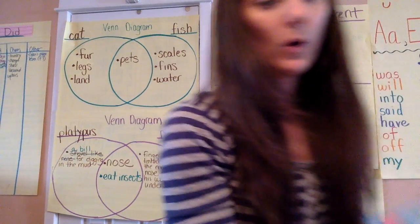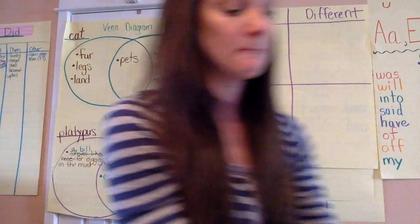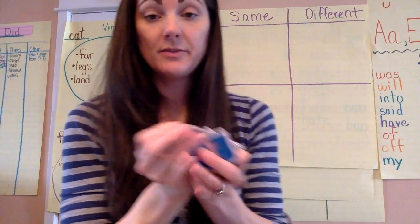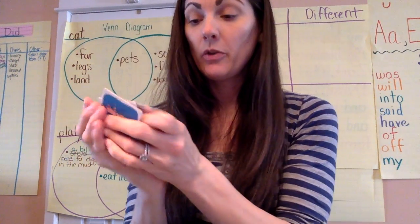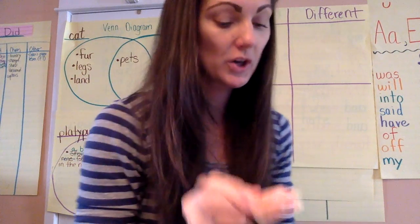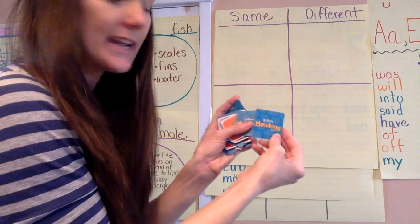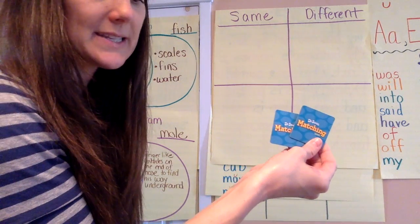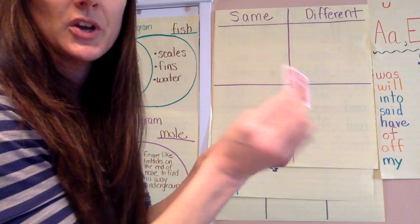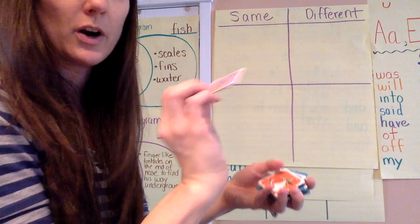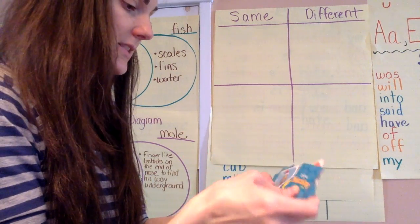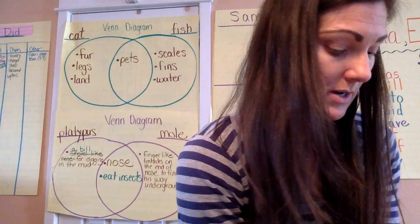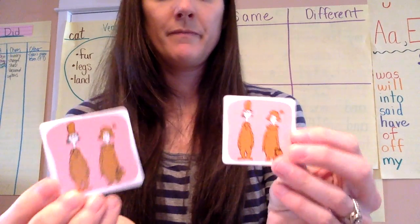And then for the Dr. Seuss matching game, it has a bunch of cards like this that you would lay out on the table or the floor. You'd lay them face down like this. If you've ever played a matching game, you lay them all face down so that you can't see them. And then you take turns going through and turning over two cards at a time to see if you can find a match. So like this — this would be a match.